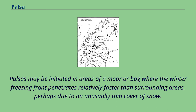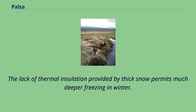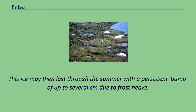Palsas may be initiated in areas of a moor or bog where the winter freezing front penetrates relatively faster than surrounding areas, perhaps due to an unusually thin cover of snow. The lack of thermal insulation provided by thick snow permits much deeper freezing in winter. This ice may then last through the summer with a persistent bump of up to several centimeters due to frost.